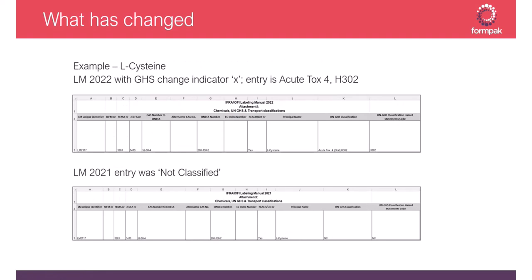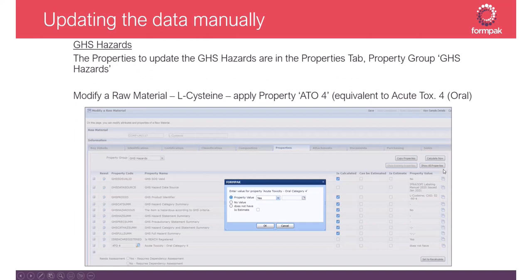Here is an example from this year's labeling manual LM 2022. We see that the UN GHS classification in column K for L-cysteine is Acute Tox 4. If we were to look at the previous year's sheet, it said 'not classified'. So this is a new classification that needs to be updated manually in FormPack.